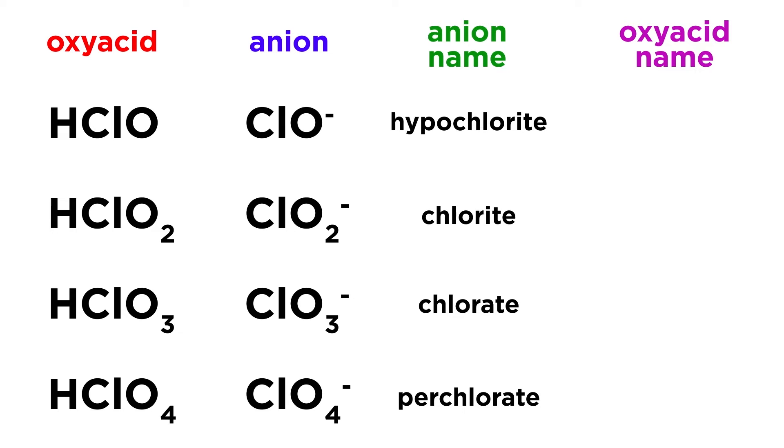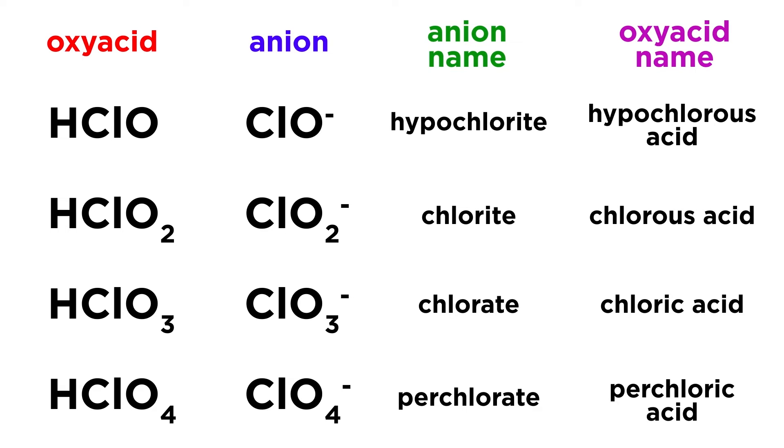When naming oxyacids containing these anions, we use these new prefixes we just discussed, and the suffixes will change according to the rules we already know. So these are hypochlorous acid, chlorous acid, chloric acid, and perchloric acid respectively.